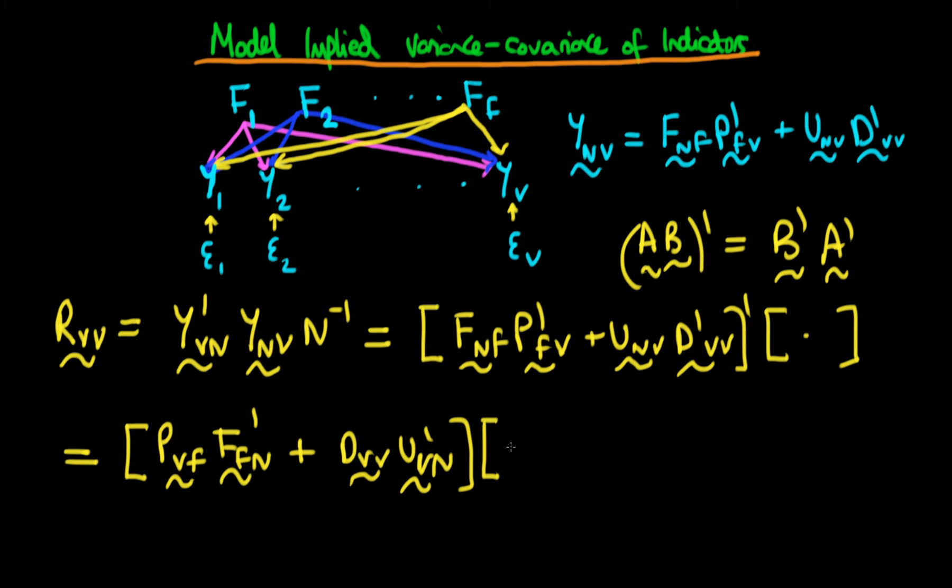It's just equal to f_nf times p_fv all primed plus u_nv times d primed vv.